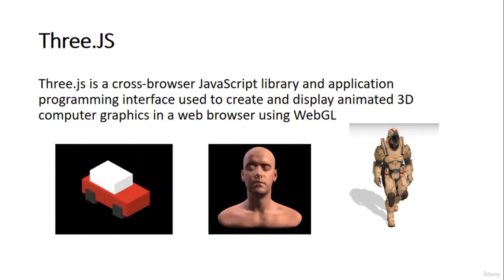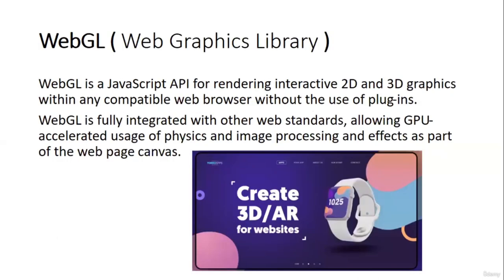Now the question arises: what is WebGL and how are we going to show our 3D models or animations on our browser? So basically WebGL is a JavaScript API for rendering interactive 2D and 3D graphics without using any plugins on our web browsers. WebGL is fully integrated with other web standards, allowing GPU-accelerated uses of physics, image processing, and effects as part of the web page canvas.